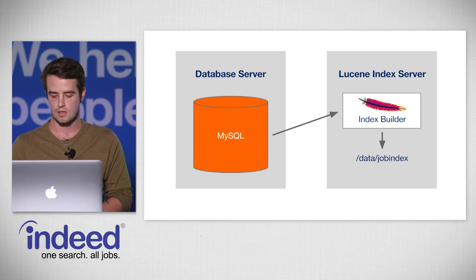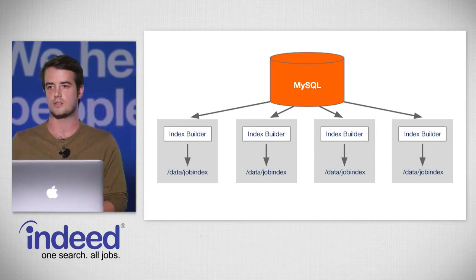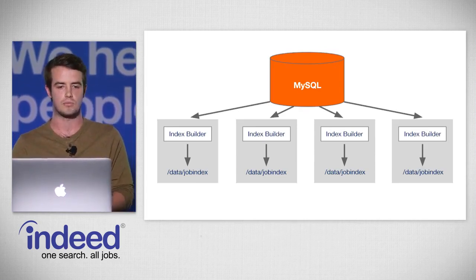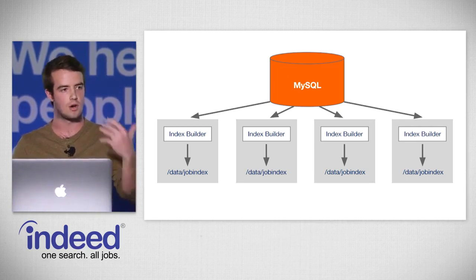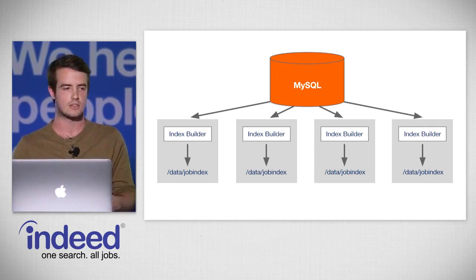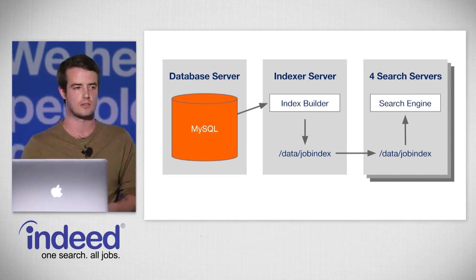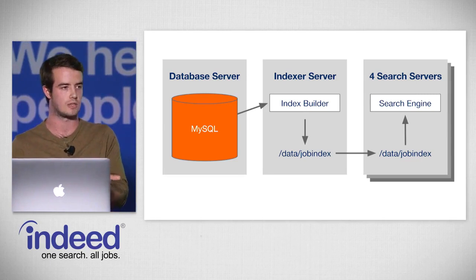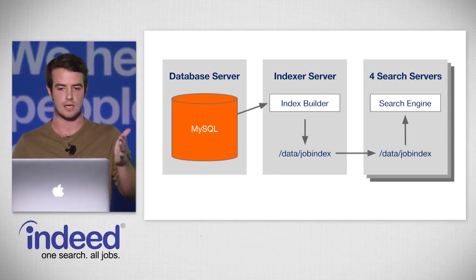We could have just run our Lucene index builder on all of our search engine servers, but we felt this was a waste — we'd be redoing the same work over and over again on many different servers, which could potentially crush our MySQL server. So we decided on an architecture where one index builder reads from MySQL, creates the job index, and then copies that job index to our search servers. We realized this design could work for really any combination of data, not just the Lucene job data.